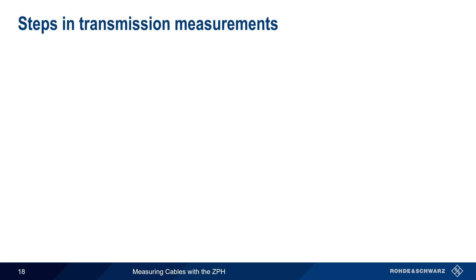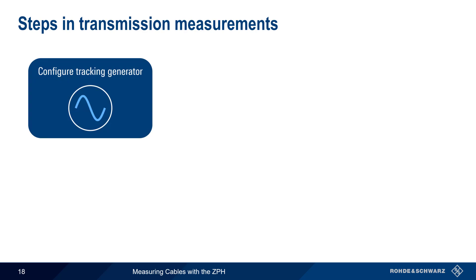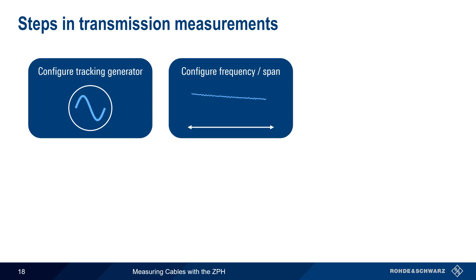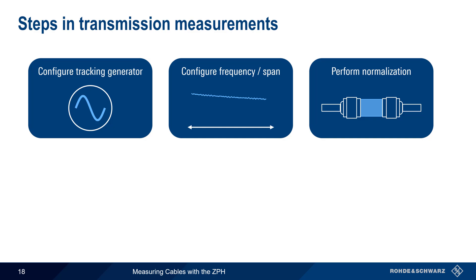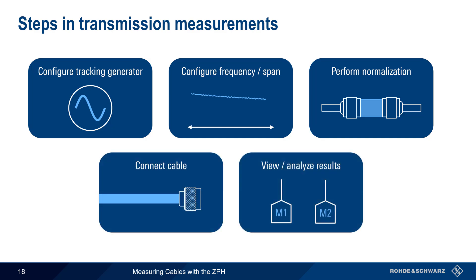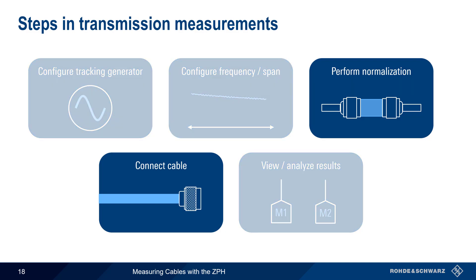The steps in making two-port or transmission cable measurements are: configuring the tracking generator, configuring frequency and span, performing a normalization, connecting the cable, and viewing or analyzing the results. Most of these steps are the same as for one-port measurements, so on the next few slides we'll concentrate on the differences between one-port and two-port methods.